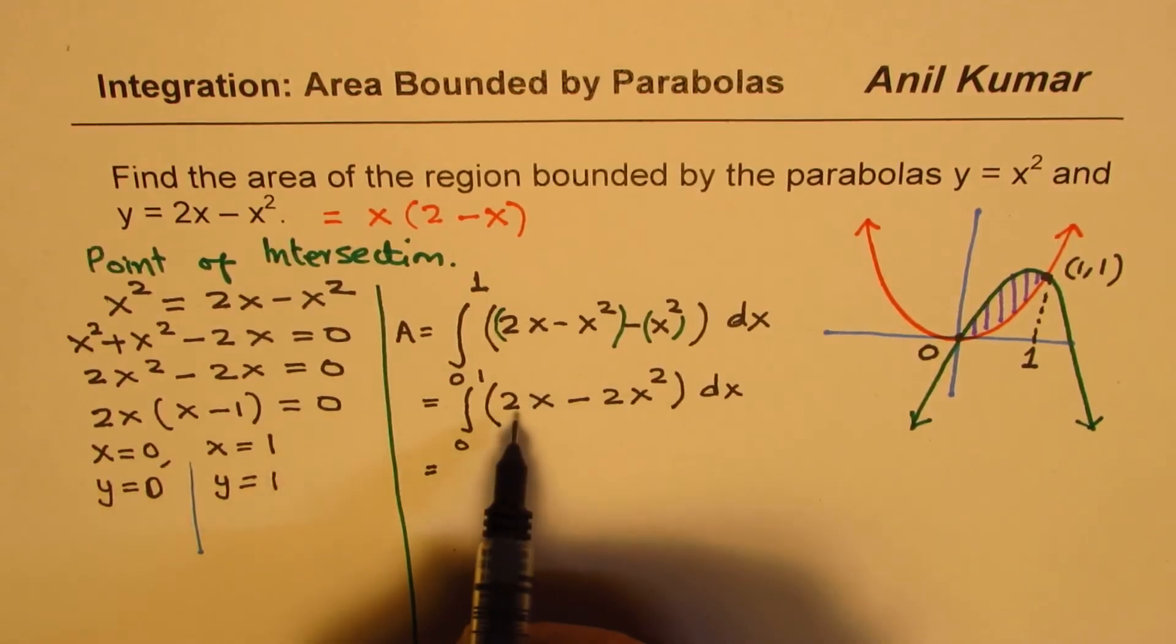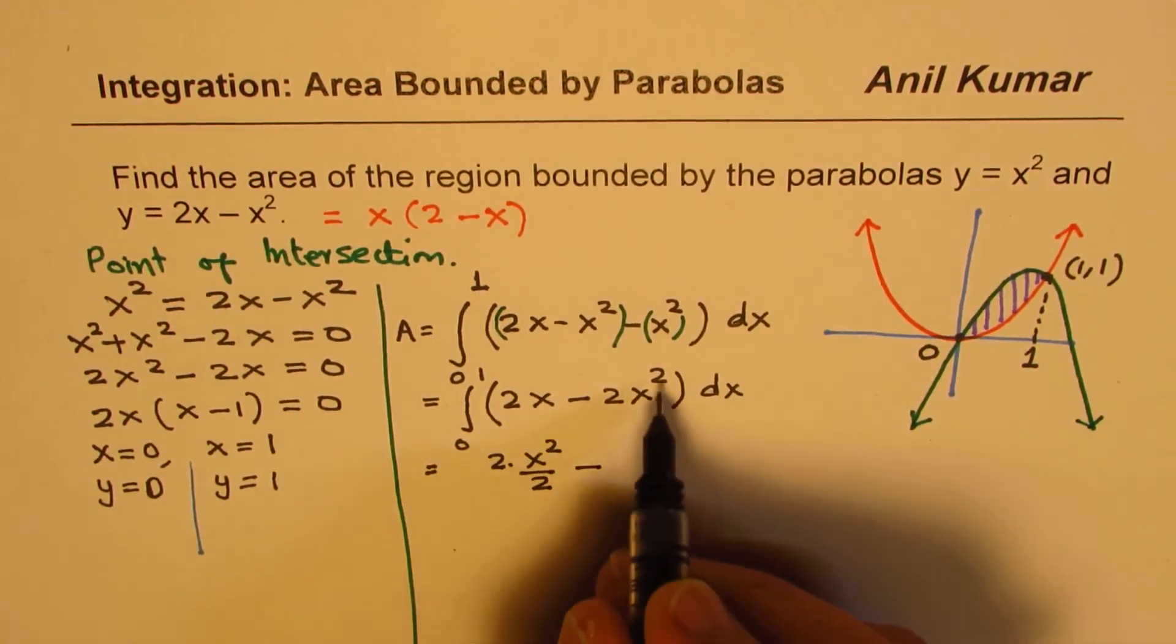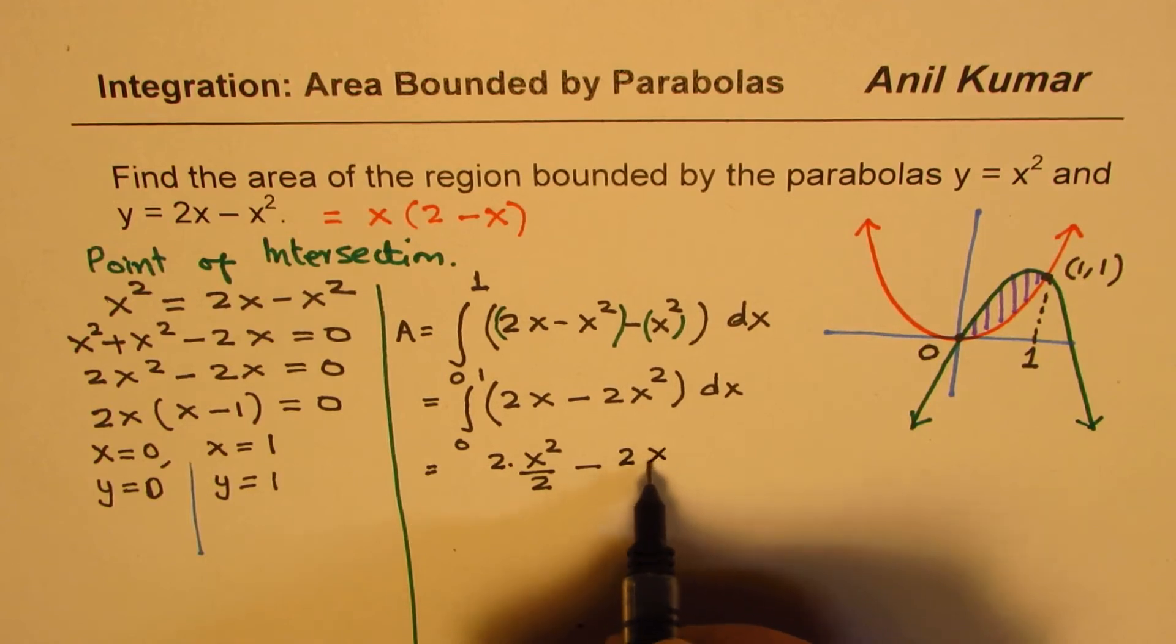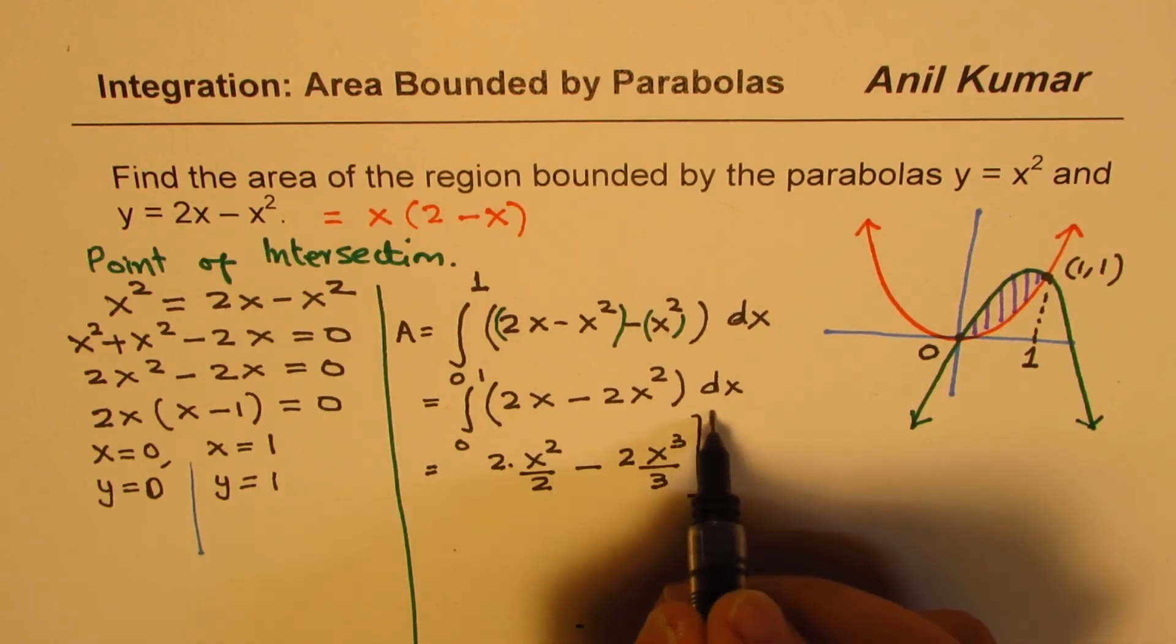The integral will be, for the first part, it is 2 times x squared over 2 minus, here we get 2 times x cubed over 3, from 0 to 1.